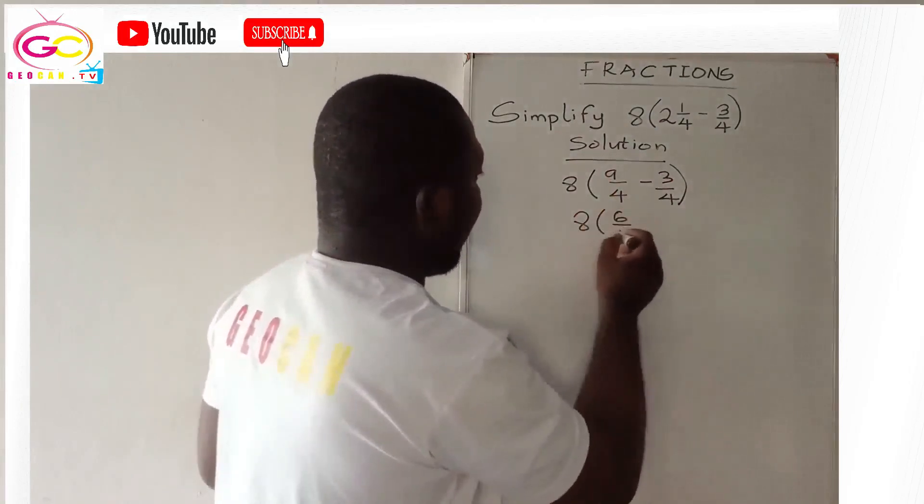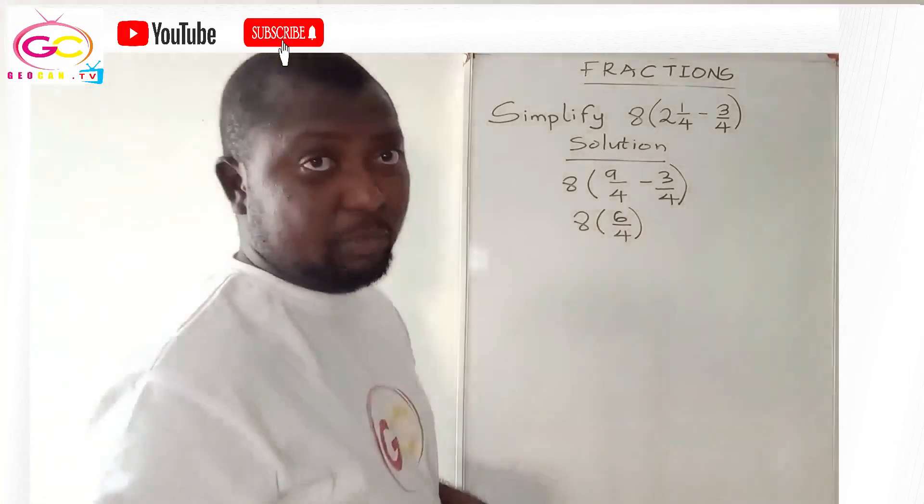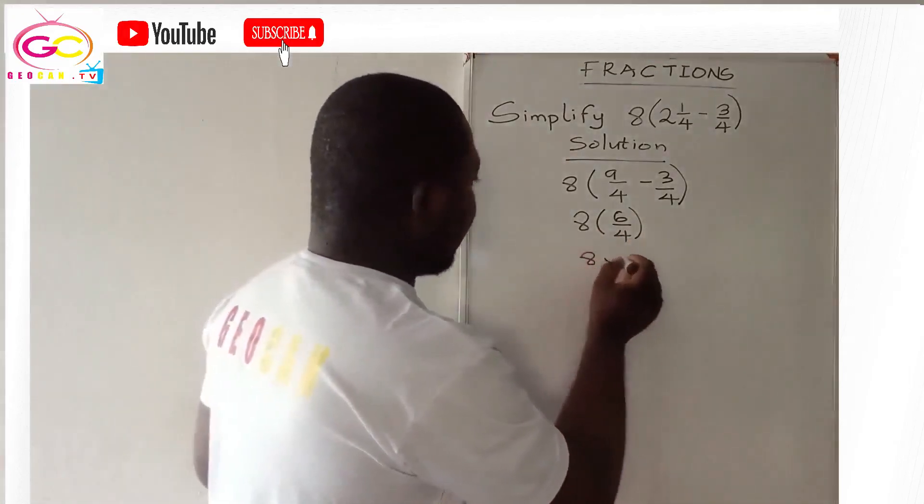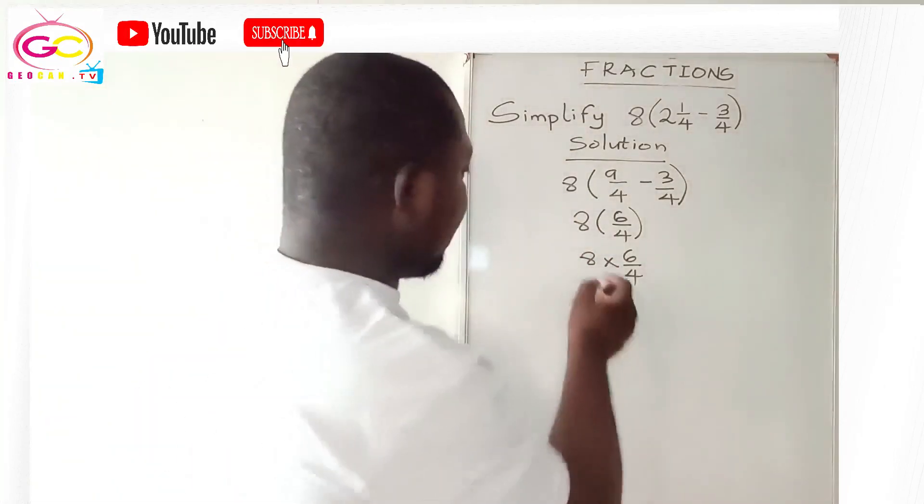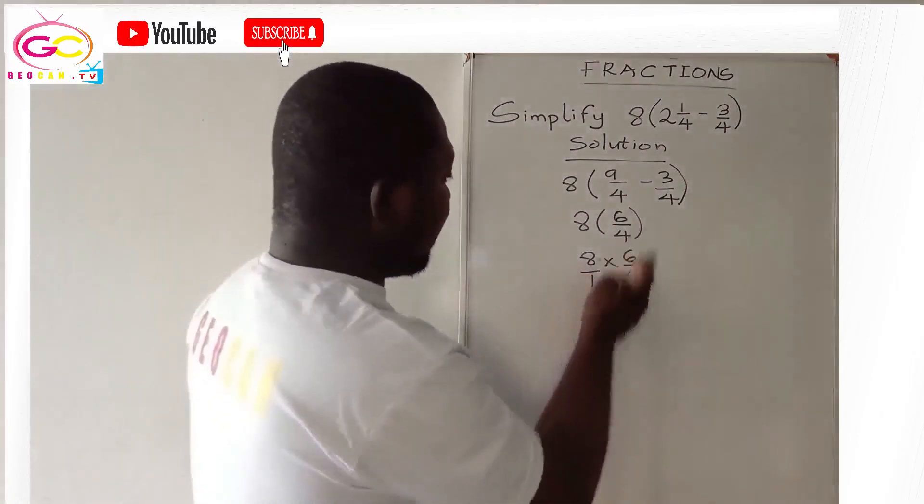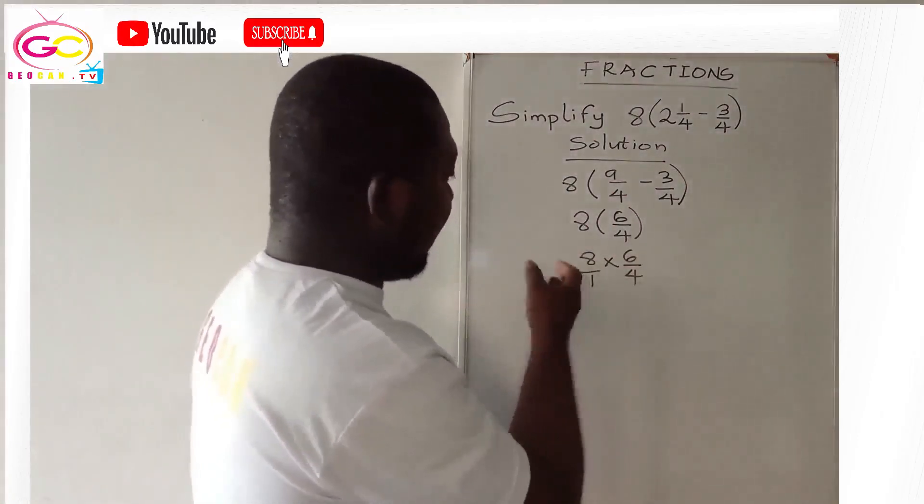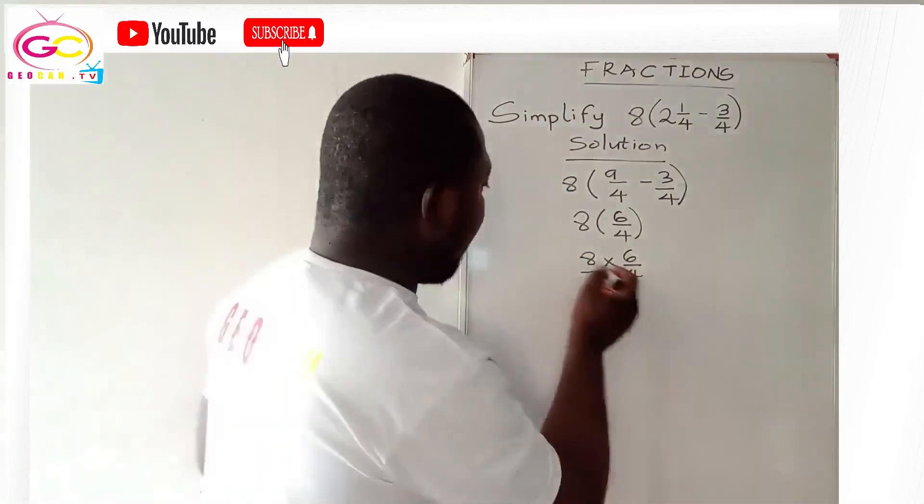Now brackets is the same as multiplication, so now we have 8 times 6/4. The 8 can also be written as 8/1. Now what do we do? We see whether we'll be able to cancel vertically or diagonally. Yes, diagonal—4 will go into 8, so 4 into 8 is 2.